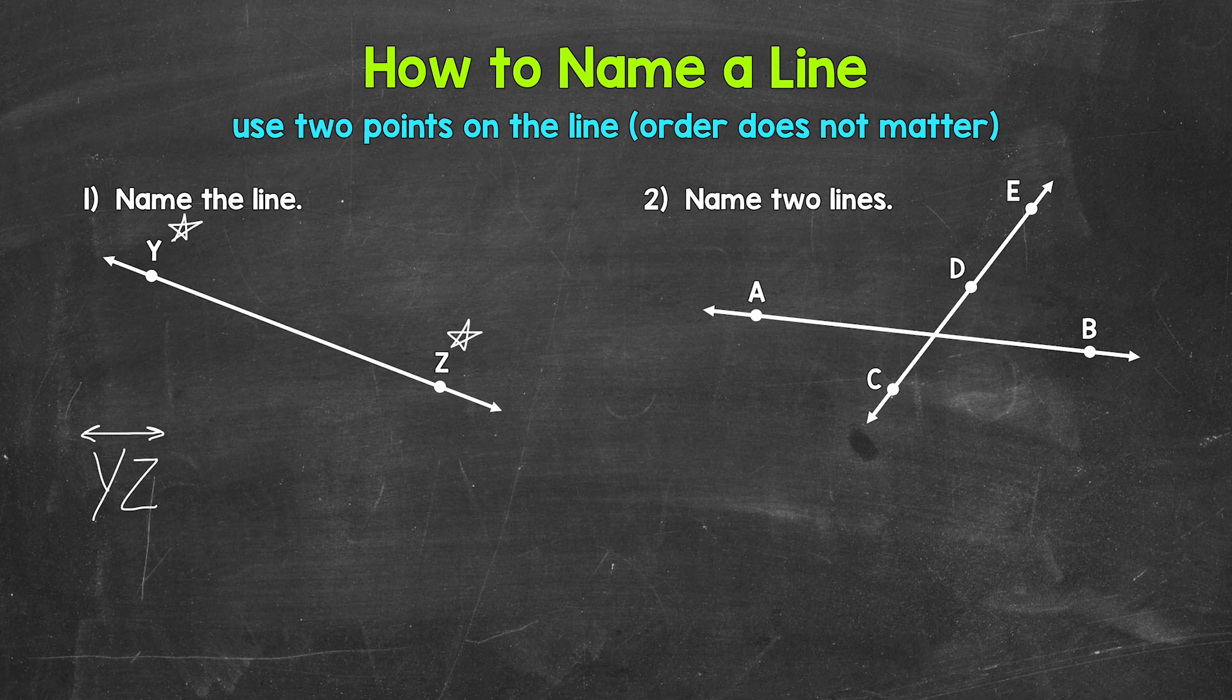Again, a line goes on forever in both directions. So the name of this line is line YZ.